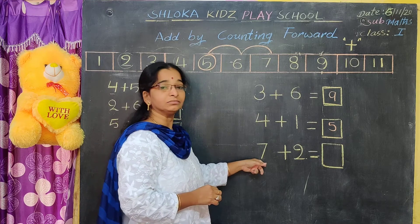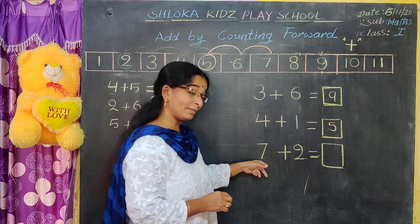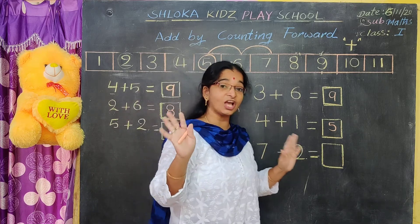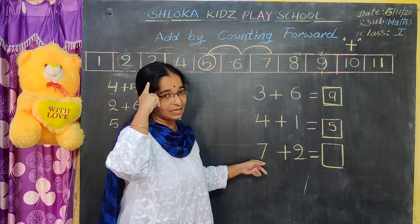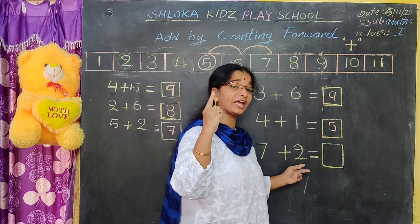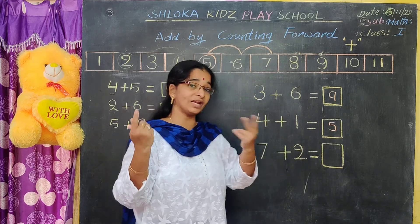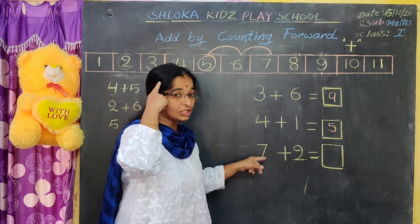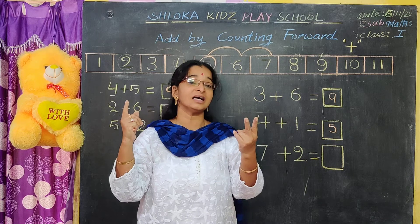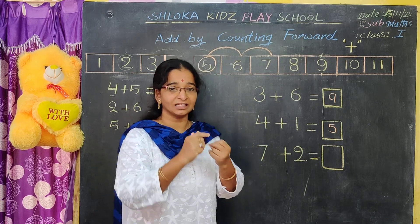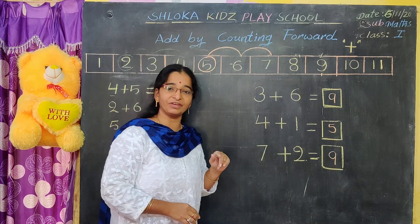Next: seven balance. You are having seven balance with you. Your friend gave you two more balance. Seven in the mind, two on the fingers. Seven after: eight, nine. Like this you have to do the additions by counting on the fingers.